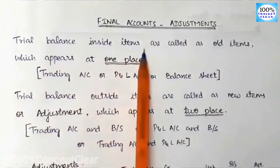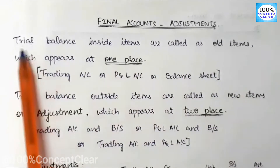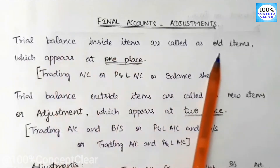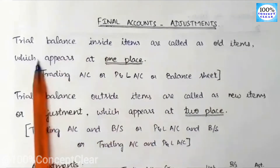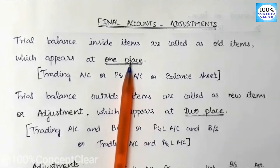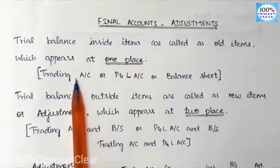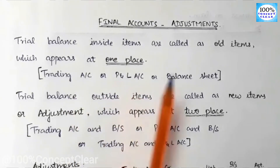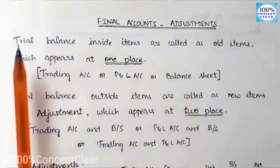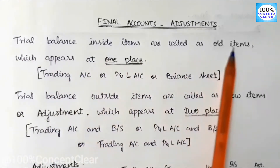Trial balance inside items are known as old items. We are looking at old items — they appear at one place: a trading account, a P&L account, or a balance sheet. The inside items are known as old items.